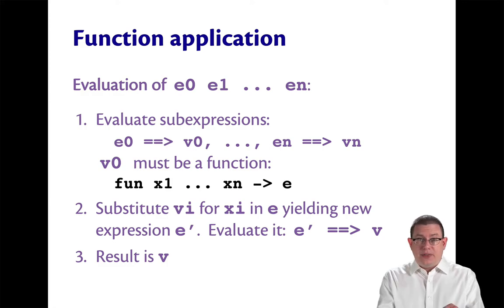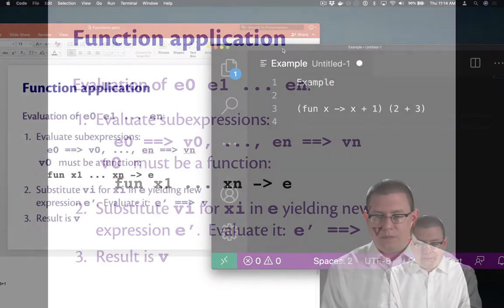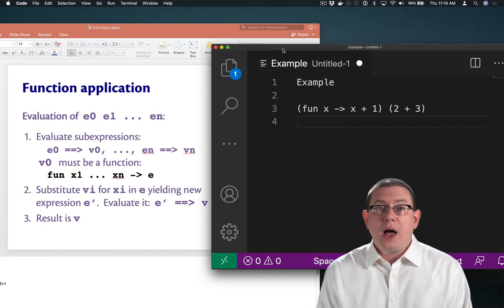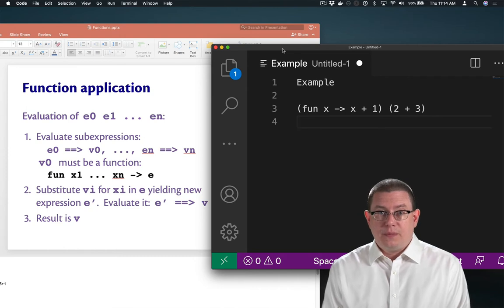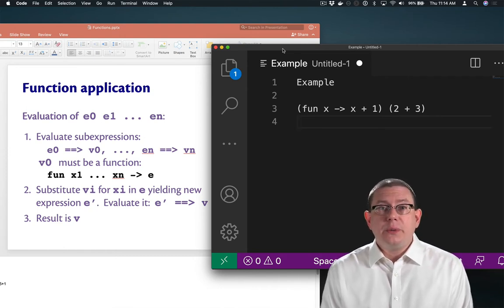Let's do an example of that. Let's apply the anonymous function that increments its argument to the expression 2 plus 3. Of course, if we increment 2 plus 3, we ought to get 6. Hopefully that's what we get in the end.